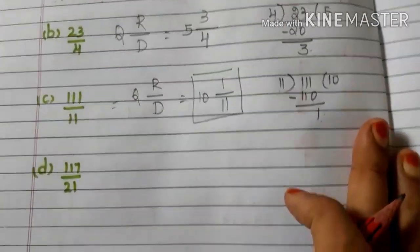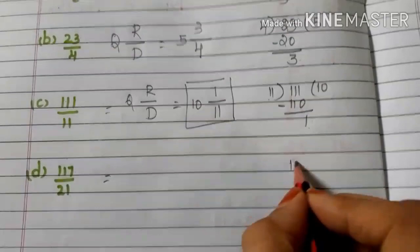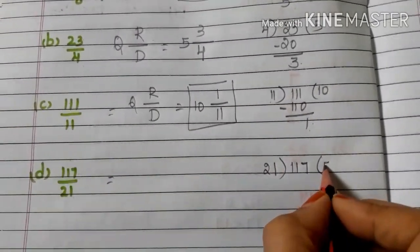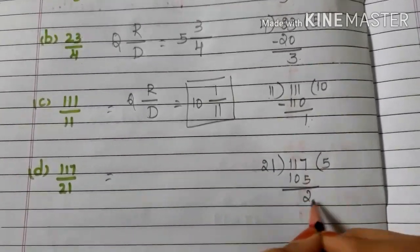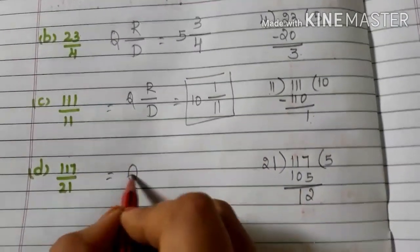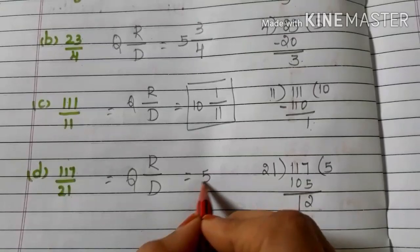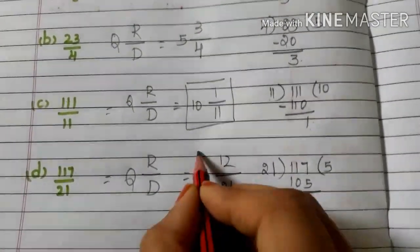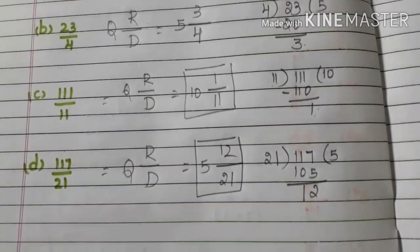D: 117/21. First divide 117 by 21. 21 fives are 105. 117 minus 105 is 12. Write the mixed fraction Q R/D. Quotient is 5, remainder is 12, divisor is 21. So the mixed fraction is 5 and 12/21.